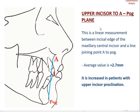The last dental parameter is the upper incisor to A-Pogonion plane. This is a linear measurement between the incisor edge of the maxillary central incisor and a line joining point A to Pogonion. You construct the A-Pogonion line, mark the incisor edge, and measure the distance. A measurement of more than 2.7 mm indicates the upper incisors are proclined. A measurement of less than 2.4 mm indicates they are retroclined. The average value is around 2.7 mm.